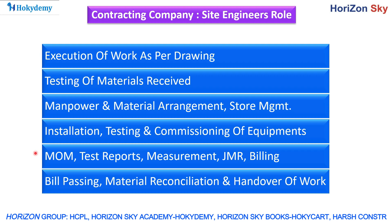The site engineer keeps up with billing as well. Billing is specific to the contract side — documenting what materials have been used to date, what equipment has been used, what services have been rendered. For example, a civil engineer's contracting company would document JCB usage hours and similar items.